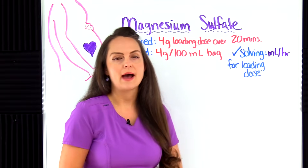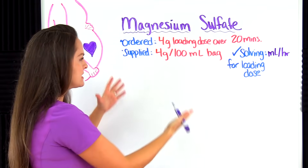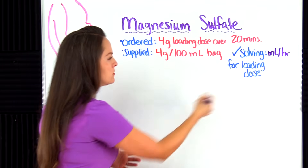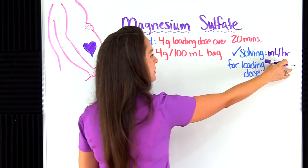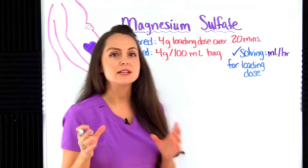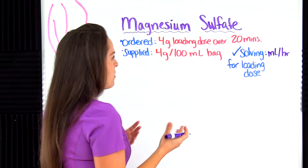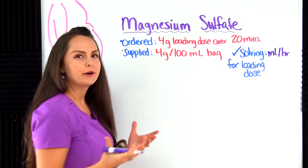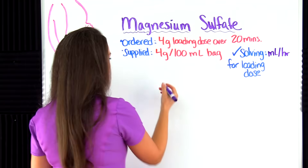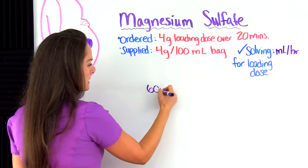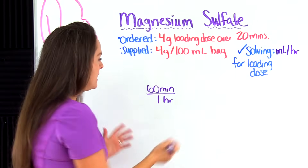We're using dimensional analysis to solve these problems, but if you prefer a different method like ratio and proportion or desired over have, I have videos that will help you with that. With dimensional analysis, we have a continuous problem with various conversion factors that cancel out until we get to the desired unit — in this case, milliliters per hour. So I'm going to start out with 60 minutes over one hour to get that hour conversion in there.